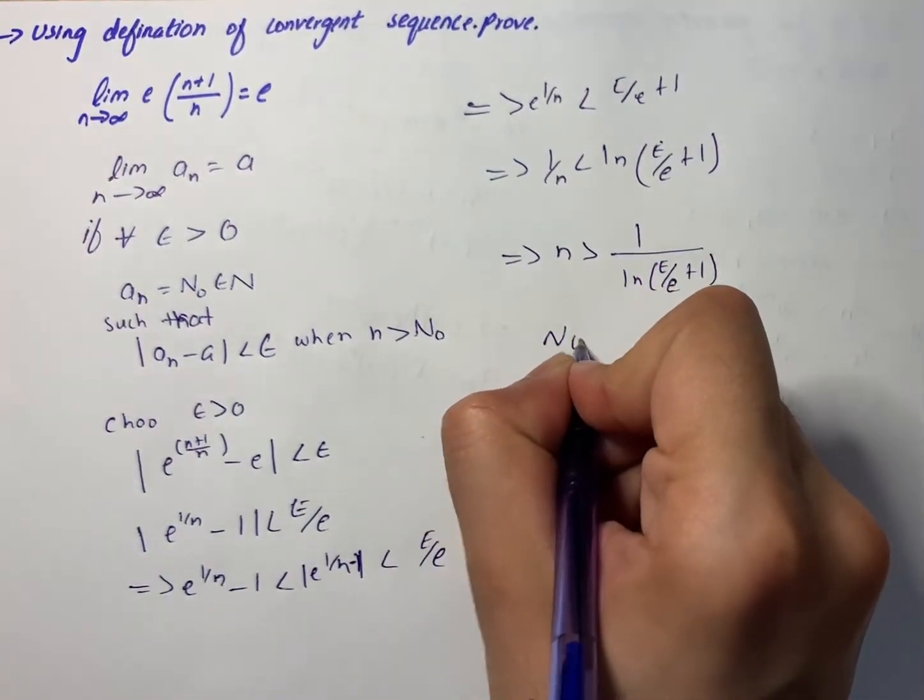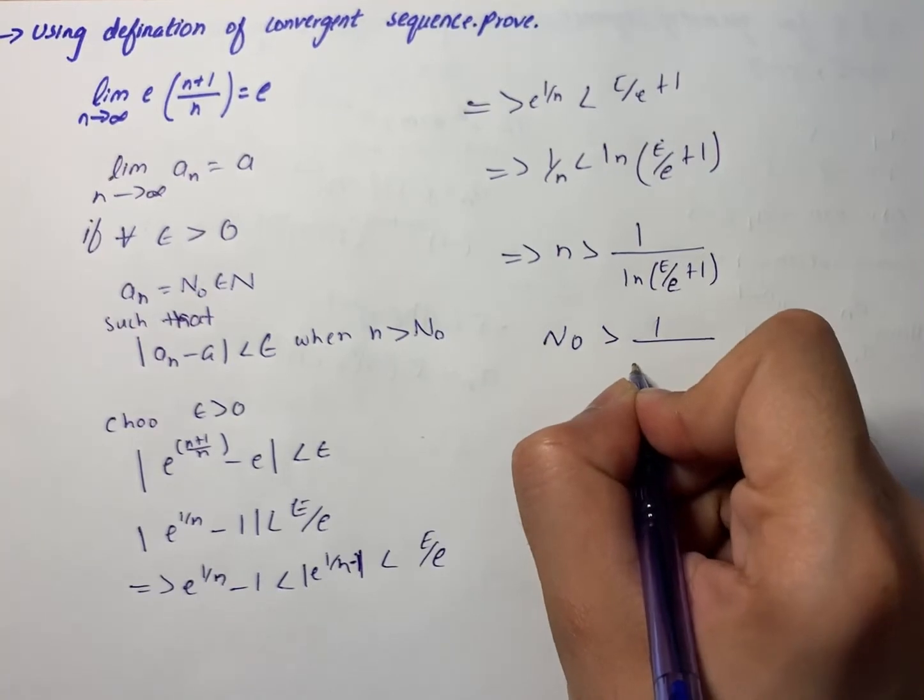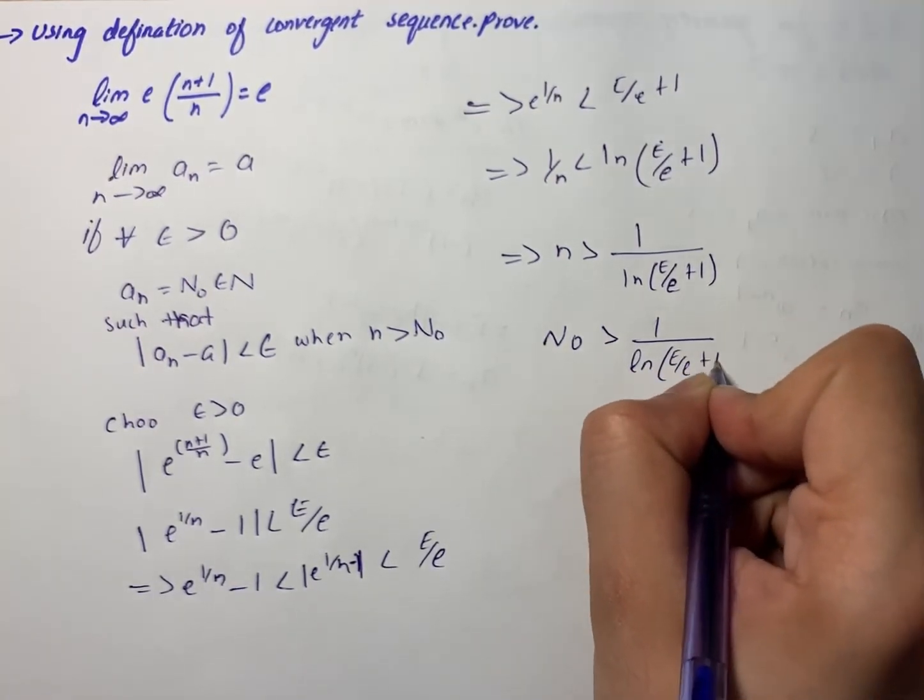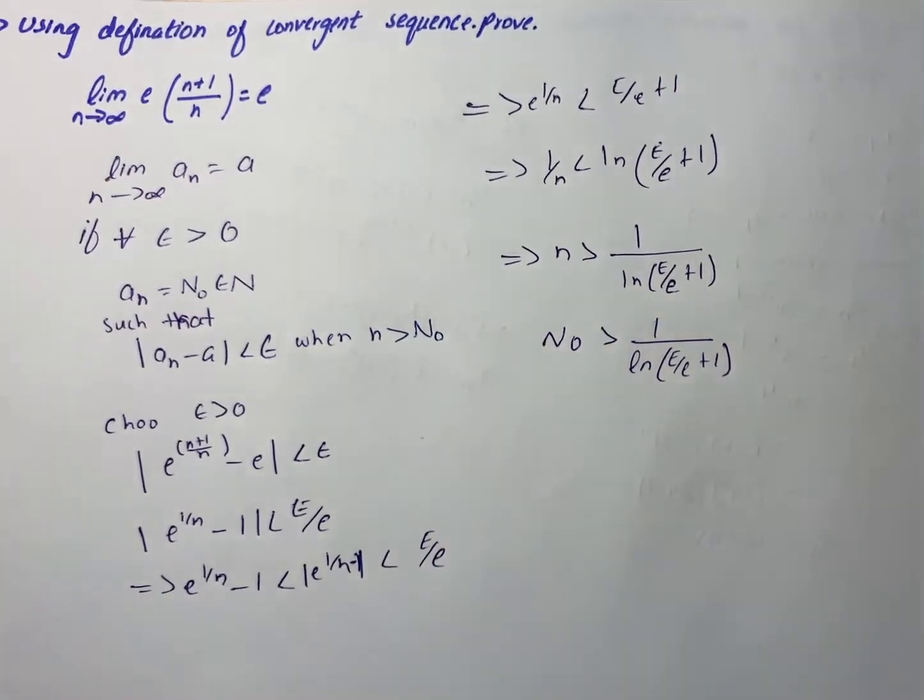We have n_0 is greater than 1 divided by natural log of epsilon/e plus 1. Now we can find any n_0.